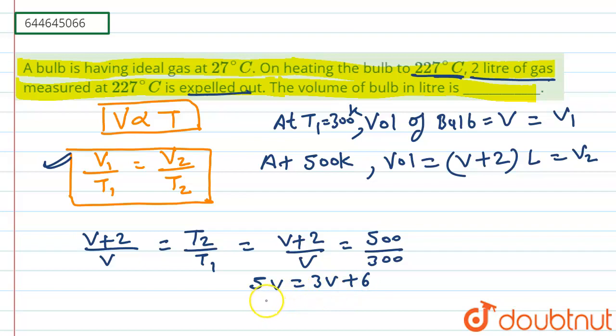And we will get V equals 3 liters. So the volume of bulb is 3 liters, that is our correct answer. And how it is coming, I have shown you. I hope you get the concept.